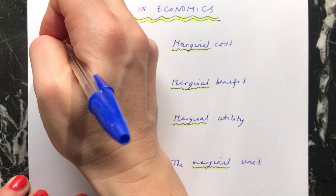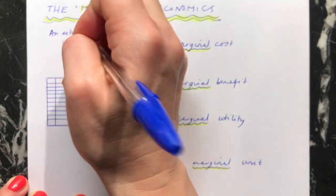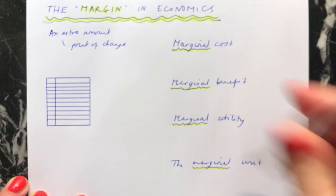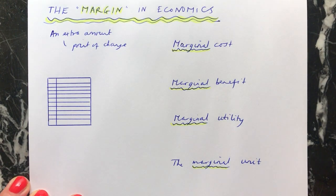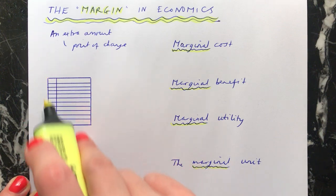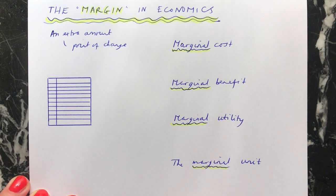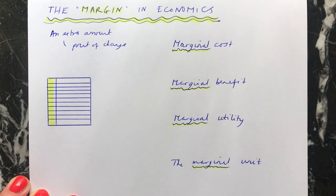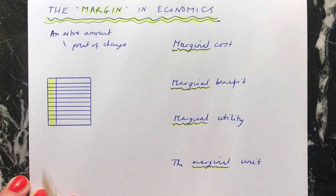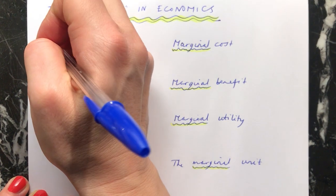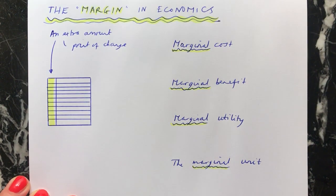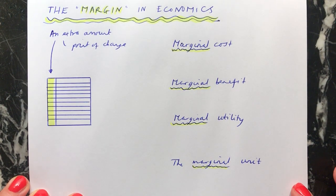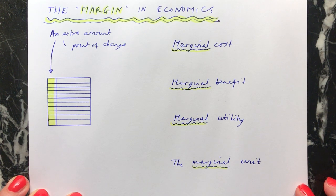And sometimes it's called the point of change. A way of remembering the margin is that this is a piece of paper — when you've got a lined piece of paper, this section along the left hand side we call the margin. This is an additional amount of paper — that's a way of remembering it. So the margin in any context means that you have an extra or additional amount of something.